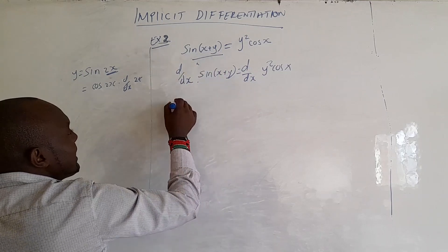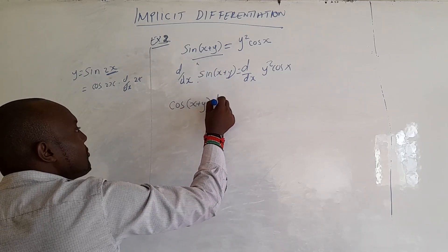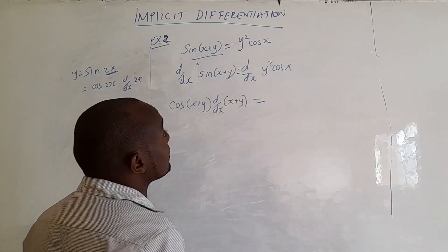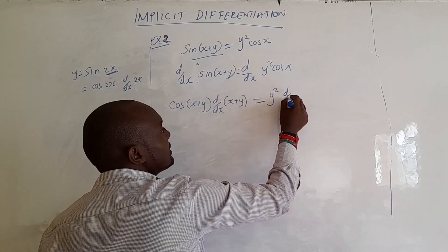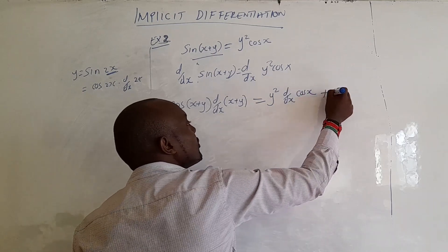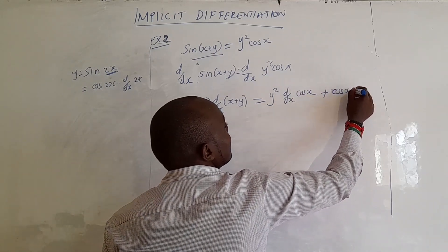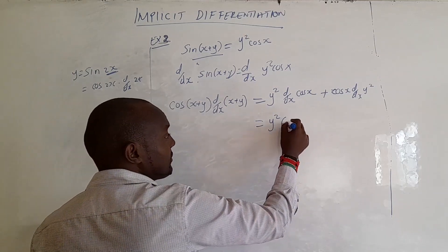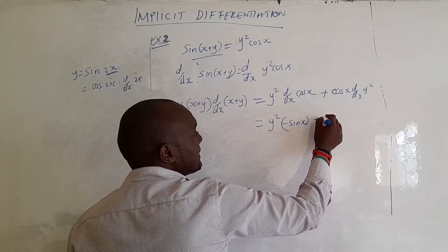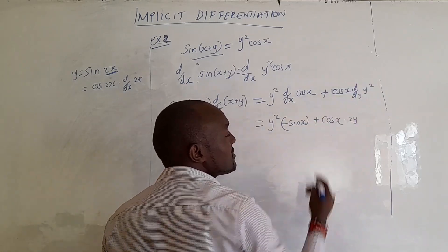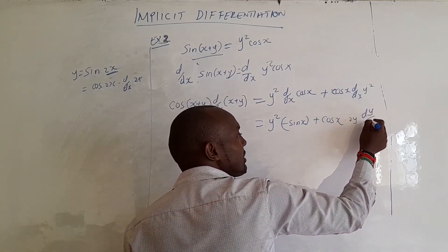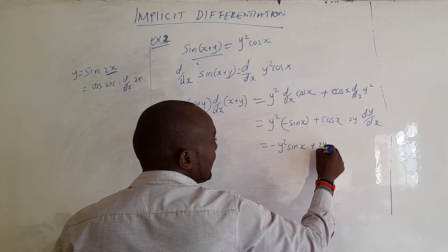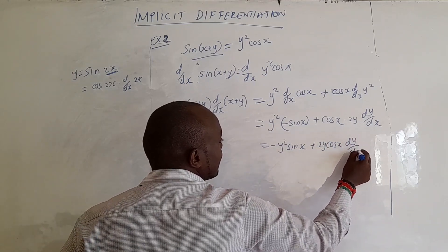Applying the product rule on the right-hand side: hold y squared constant and differentiate cos x to get negative sin x, giving negative y squared sin x. Then hold cos x constant and differentiate y squared to get 2y, but because we differentiated y we add dy/dx, giving 2y cos x dy/dx. So the right-hand side is negative y squared sin x plus 2y cos x dy/dx.